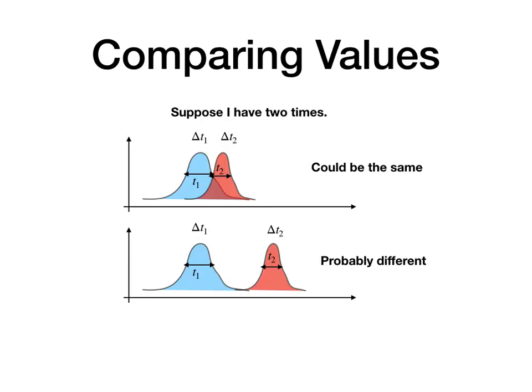What do we do with uncertainty? Well, we use this to compare values. Suppose I measure two time intervals, and I show them as normal distributions. If those uncertainties for the two time intervals overlap even a little bit, then we're going to say they could be the same thing. They could be part of the same normal distribution. If the two uncertainties don't overlap, we could say they're probably different. So if T2, the minimum T2 value is less than the maximum T1 value, then they overlap. If they don't overlap, then they could be different.